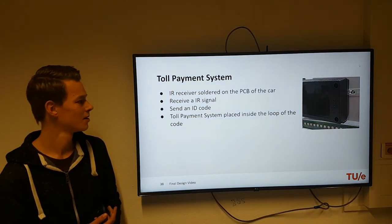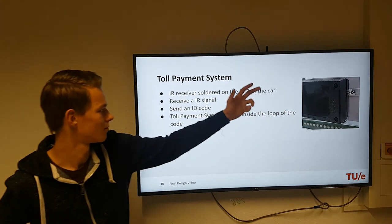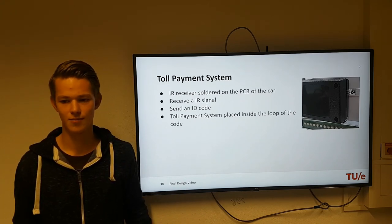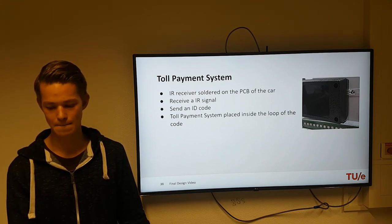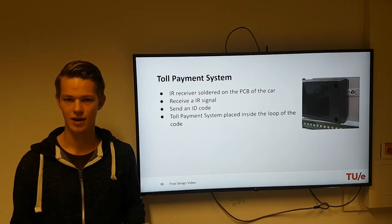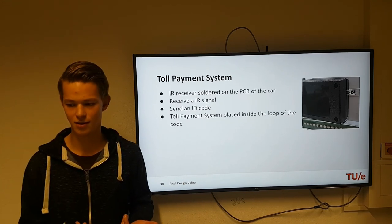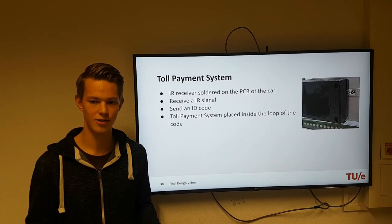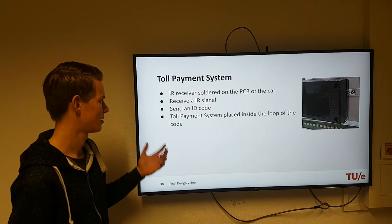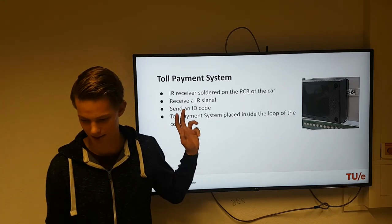We also had to implement the toll payment system. First we needed to solder the IR sensor to a breadboard and a PCB connected to the Arduino, so we could receive the infrared signal from the toll payment system on the trackside. When we receive the signal, we first have to decode it to see if it is the right length and has the right value. If that's true, the car sends its car number — which is 3 for us — to the trackside with a radio module also connected to the Arduino, and then the lap time can be calculated. We placed the toll payment system in the main loop rather than using an interrupt, and I'll explain why shortly.